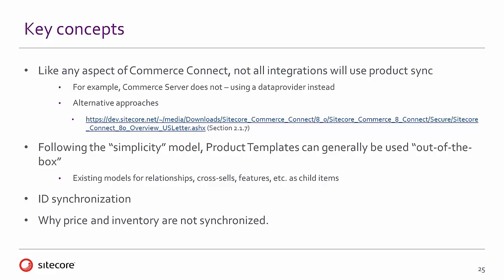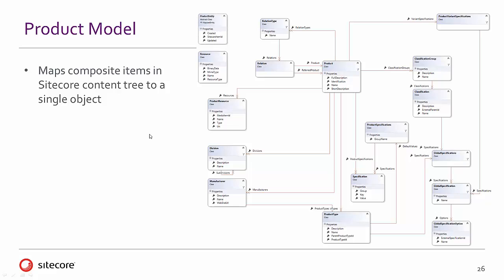When you look at the product object, you are not going to see price and inventory. Looking at the product model, what we're doing in Commerce Connect is mapping composite items in the Sitecore content tree to a single object which you can access using the API. Essentially, everything comes from a product, and you can have multiple relations, multiple resources, etc. You can access a product as a single object using the API, but in fact these are composite items in the Sitecore content tree.